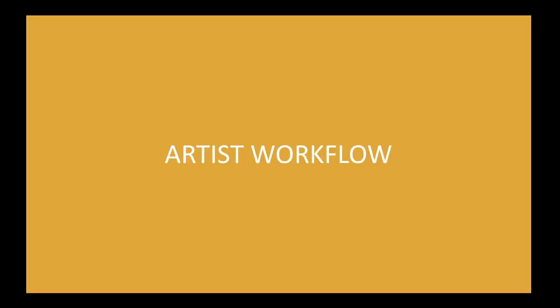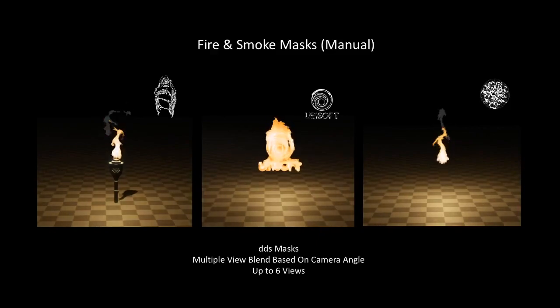Let's see what an artist can control. There are two ways to generate fire and smoke, manual and automatic. In the manual way, we use up to 6 different DDS masks and blend them based on the camera angle.